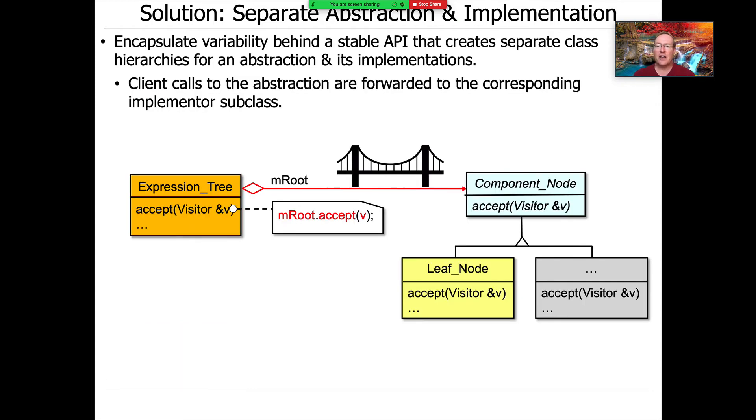The way this works under the hood is we have a reference or pointer from the abstraction, which is the part on the left-hand side (the expression tree), that forwards to the corresponding implementer subclass object on the right-hand side. When anybody calls a method that's part of the API on the abstraction, like the accept method on our expression tree, that doesn't do any work—it just forwards to the appropriate accept method that's configured into the hierarchy on the right-hand side.